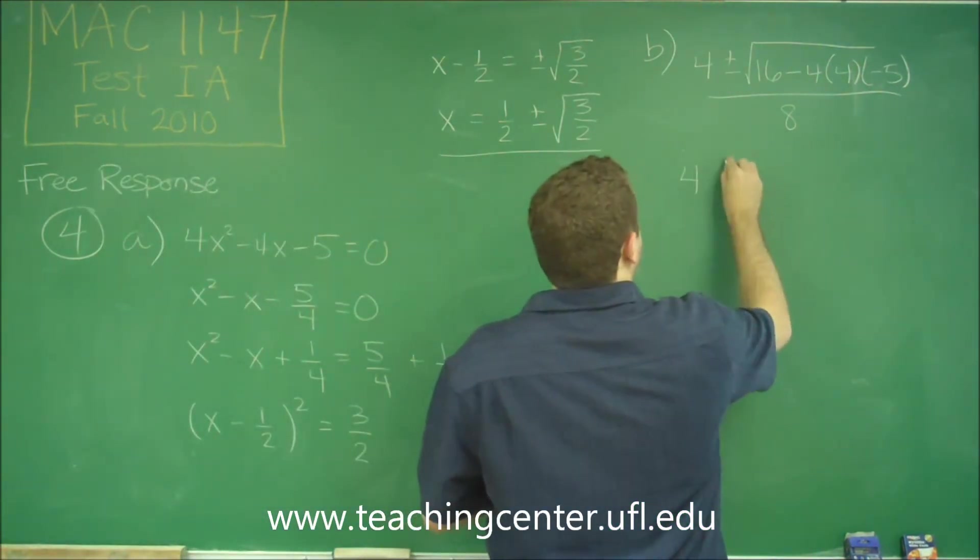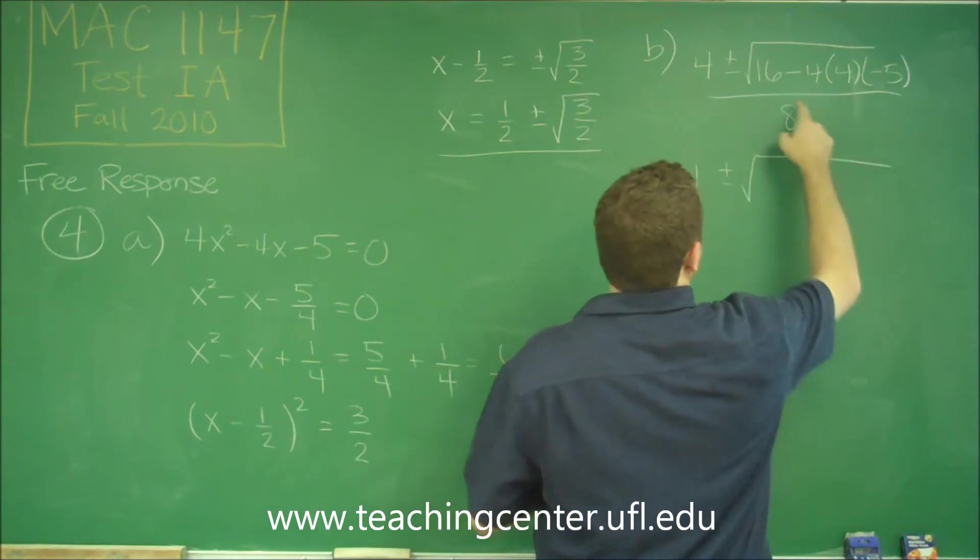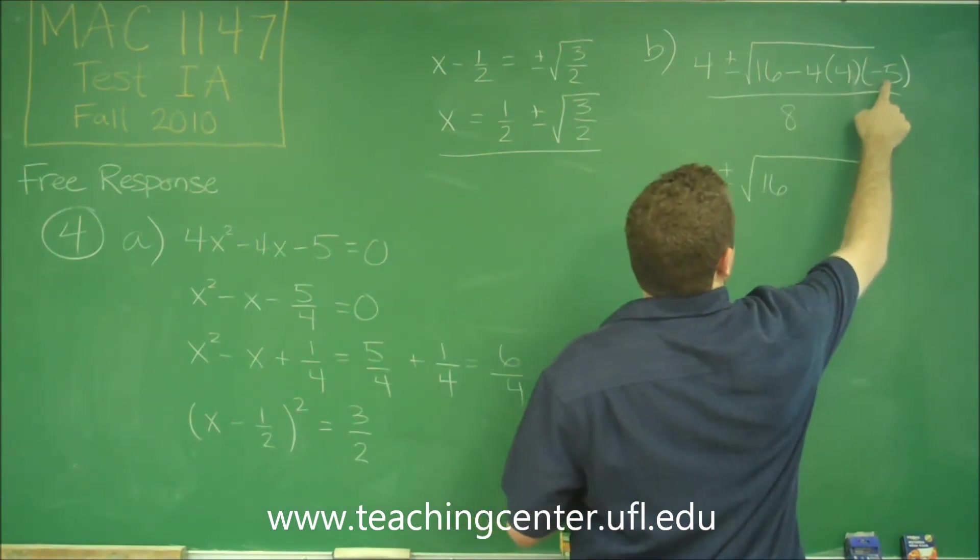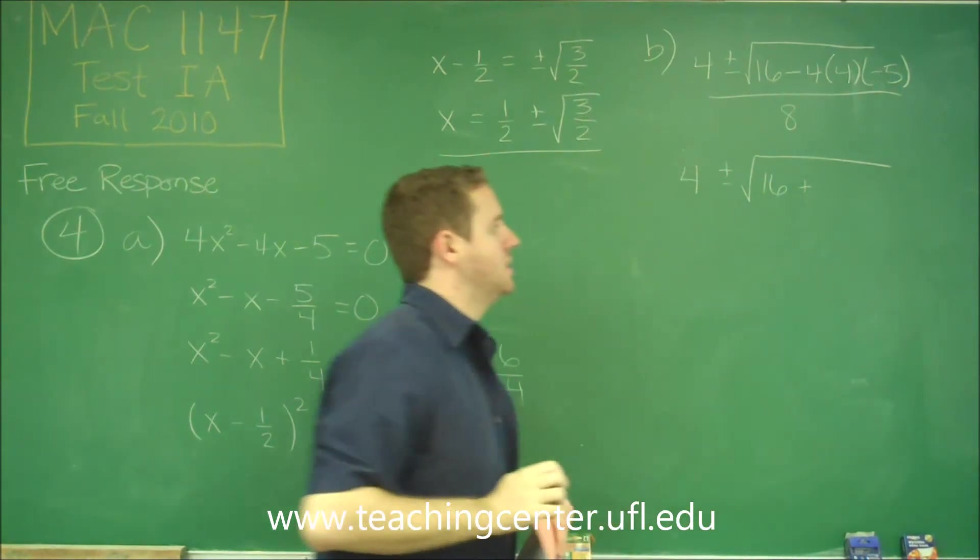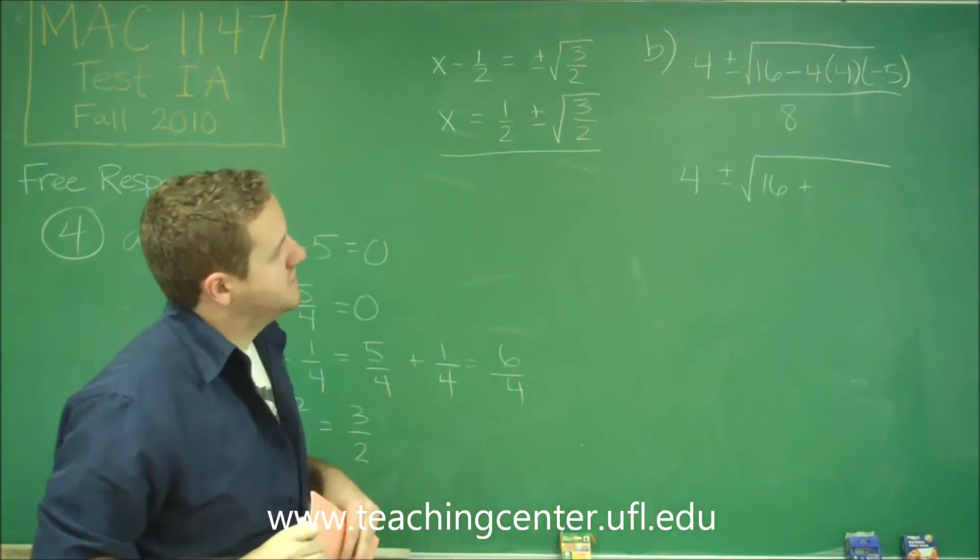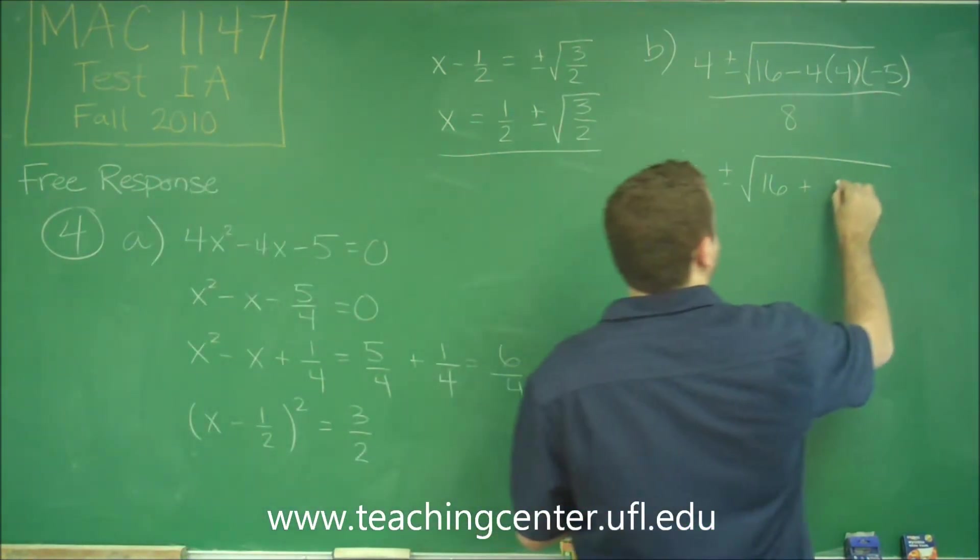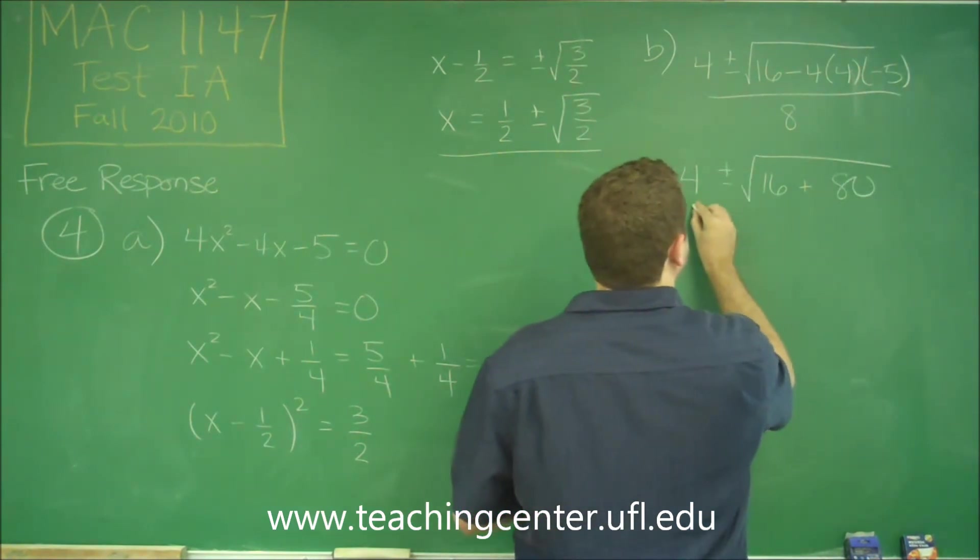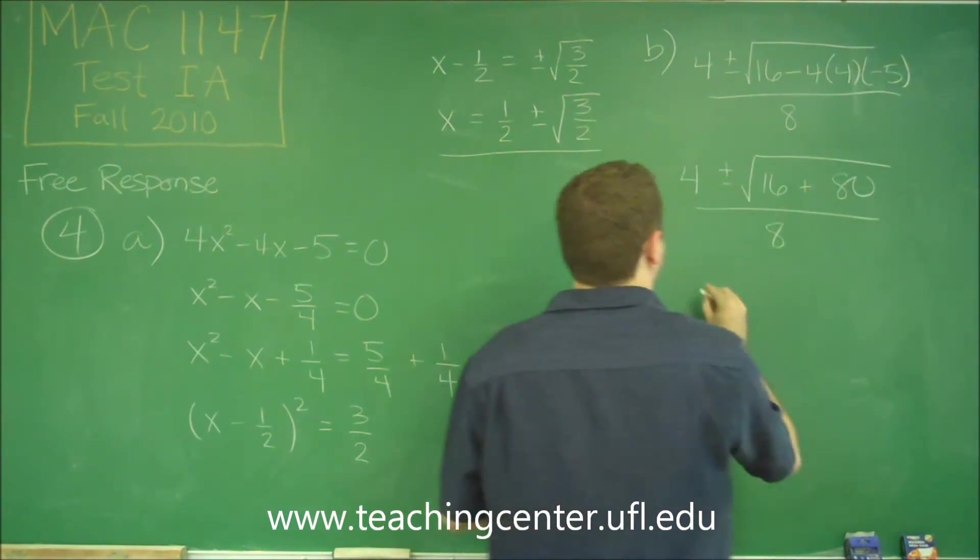So we get 4 ± in this root. We have now 16. We have a negative and a negative, so it's going to end up being plus. And we have 16 × 5, so that would give us 80 all over 8.